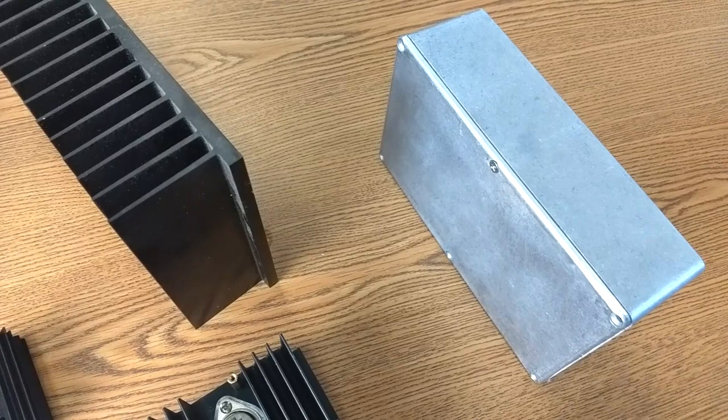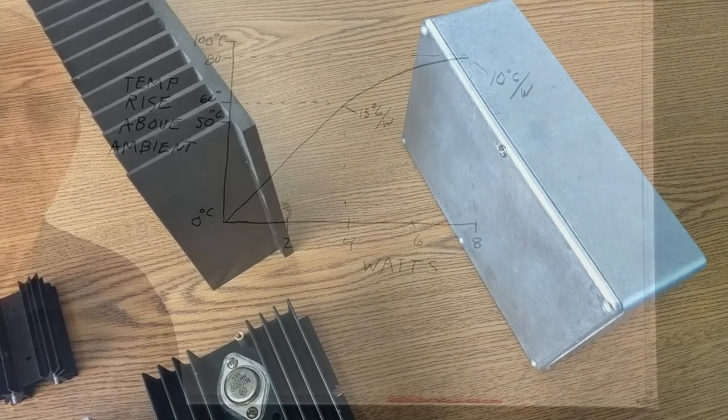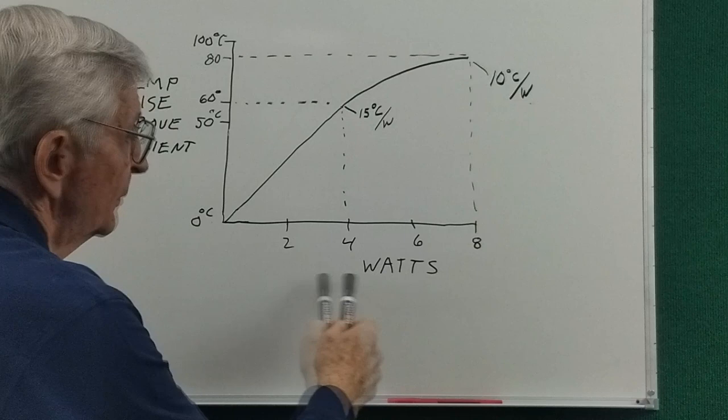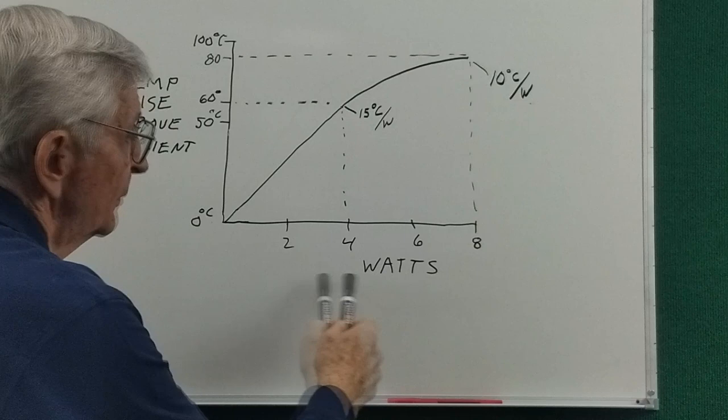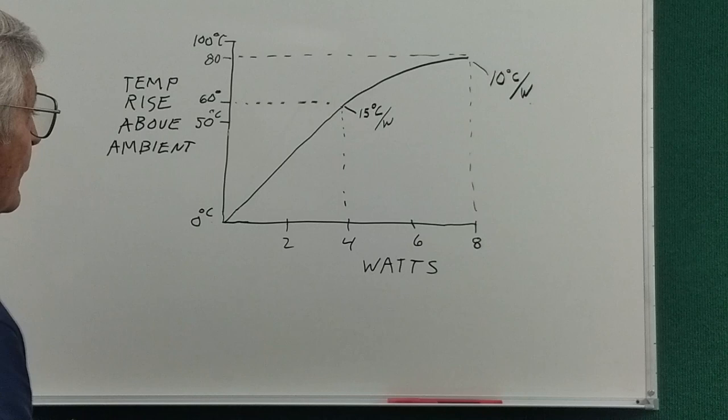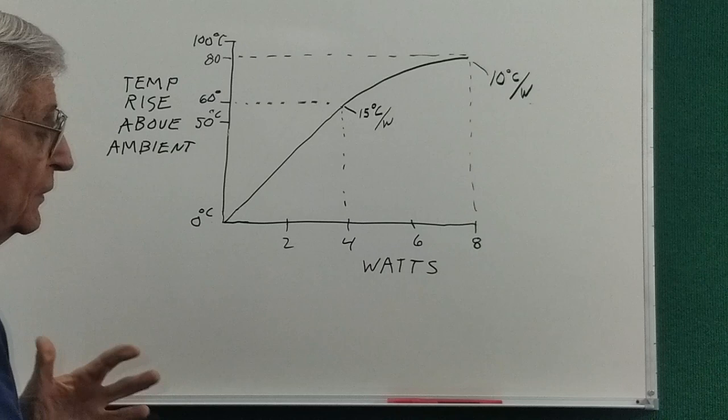And for some projects that might be mounted in a metallic enclosure, the enclosure itself can be used as a heat sink. Heat sink performance data is usually done with a curve similar to this. This is the watts dissipated by the device on the heat sink. And this is the rise above the ambient temperature.